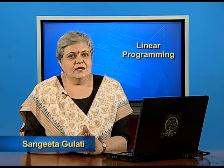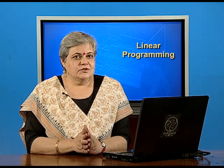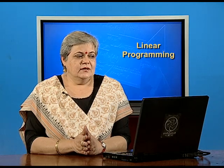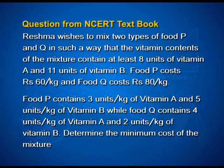Our first question is from the NCERT textbook, page 519. The problem states that Reshma wishes to mix two types of food P and Q in such a way that the vitamin content of the mixture contains at least 8 units of vitamin A and 11 units of vitamin B. Food P costs rupees 60 per kg and food Q costs rupees 80 per kg. Food P contains 3 units per kg of vitamin A and 5 units per kg of vitamin B, while food Q contains 4 units per kg of vitamin A and 2 units per kg of vitamin B. We have to find the minimum cost of the mixture.